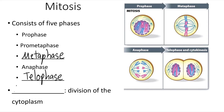As I mentioned, cytokinesis is the division of the cytoplasm. It happens around the same time as telophase, but cytokinesis is not one of the phases of mitosis. Mitosis is the division of the genetic material; cytokinesis is the division of the rest of the contents of the cell.